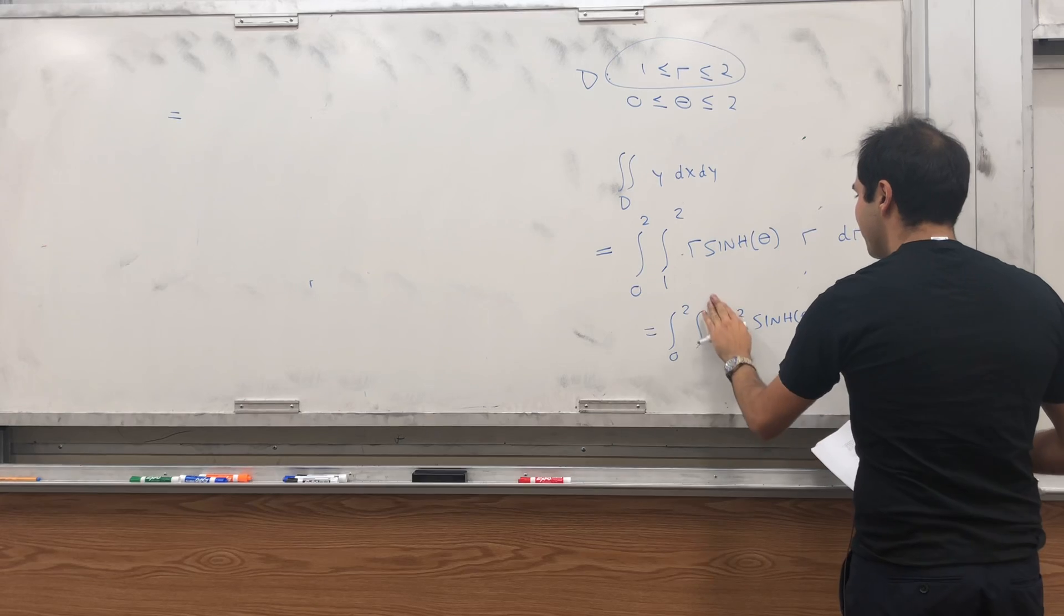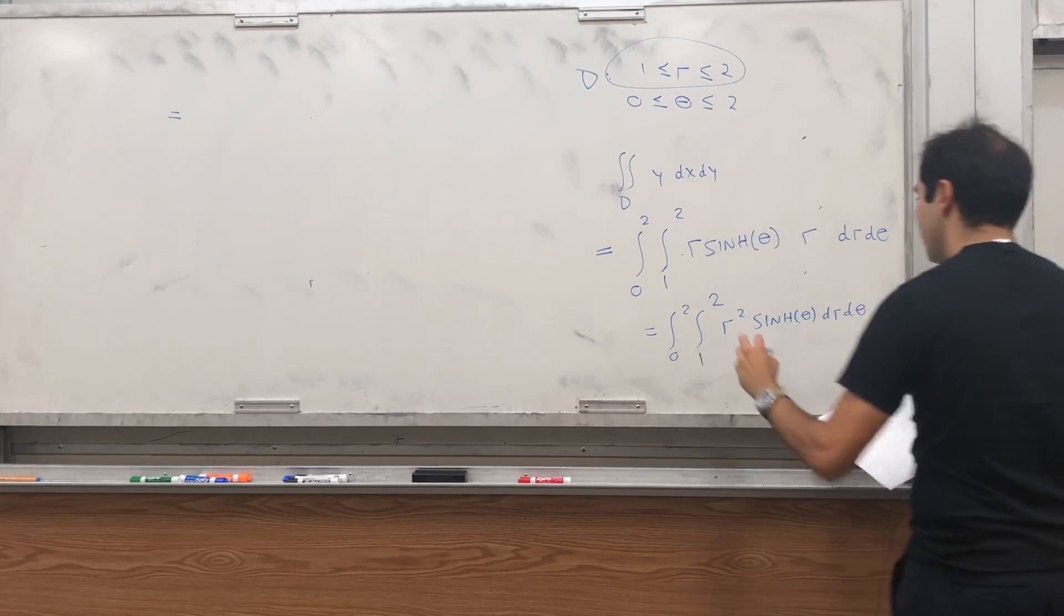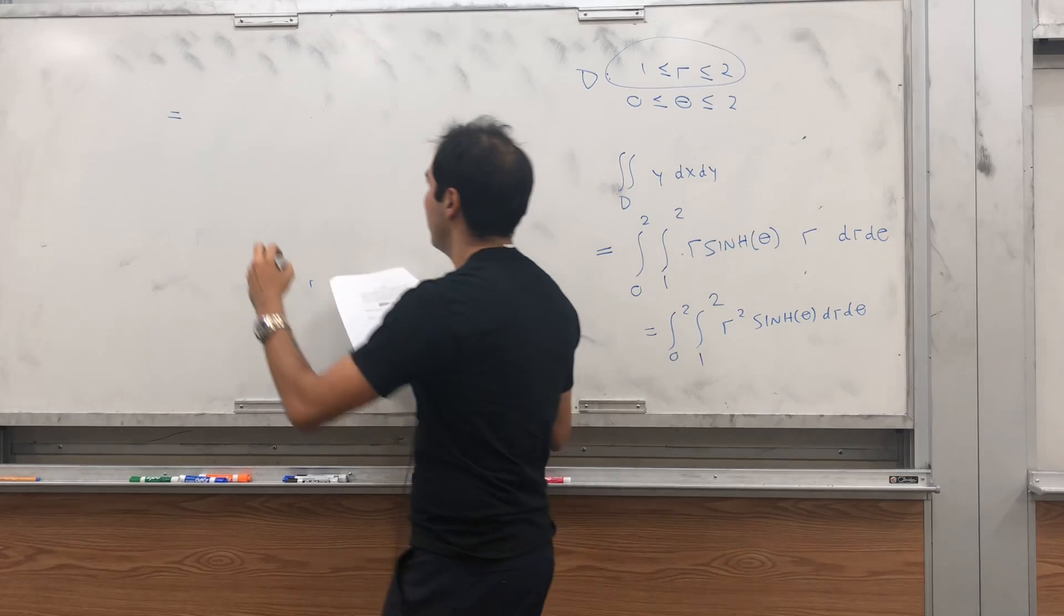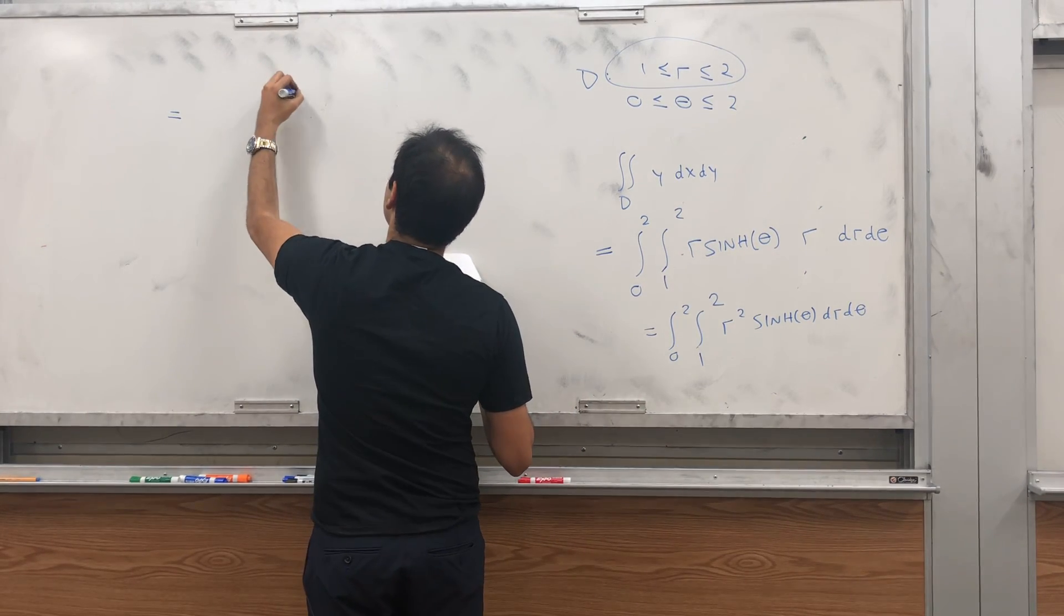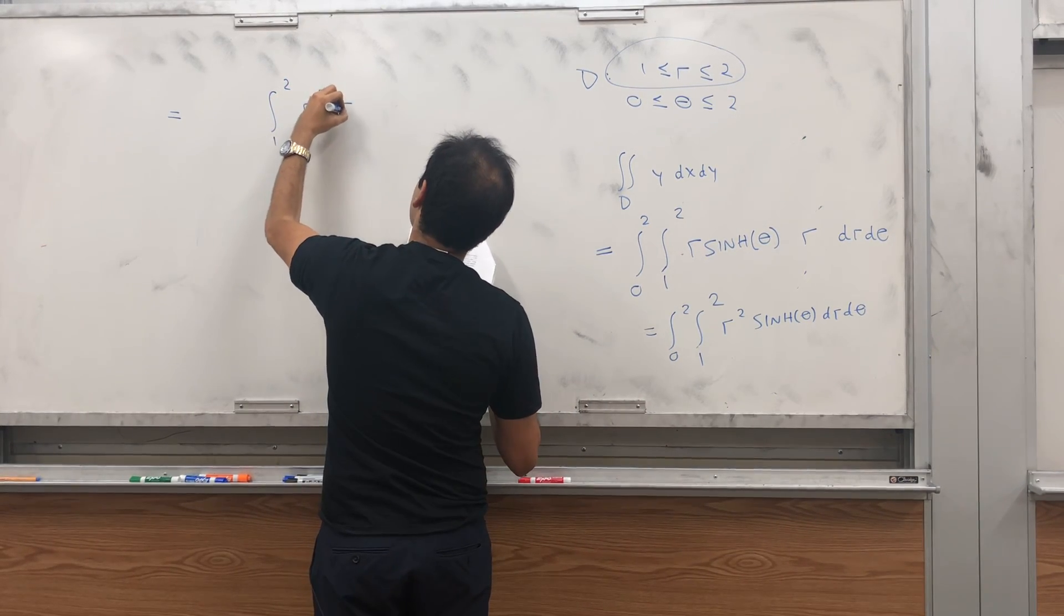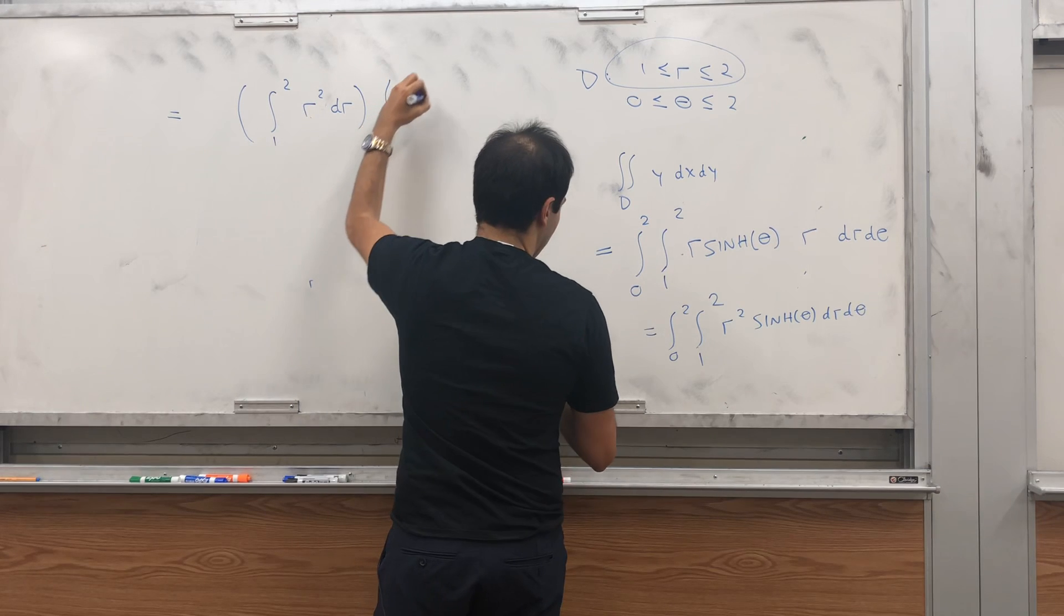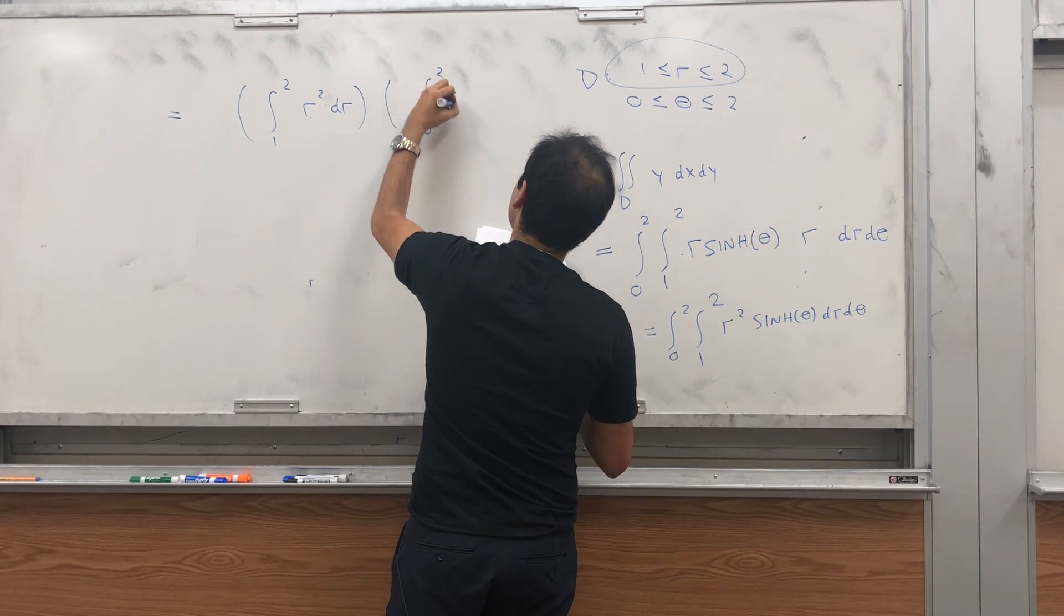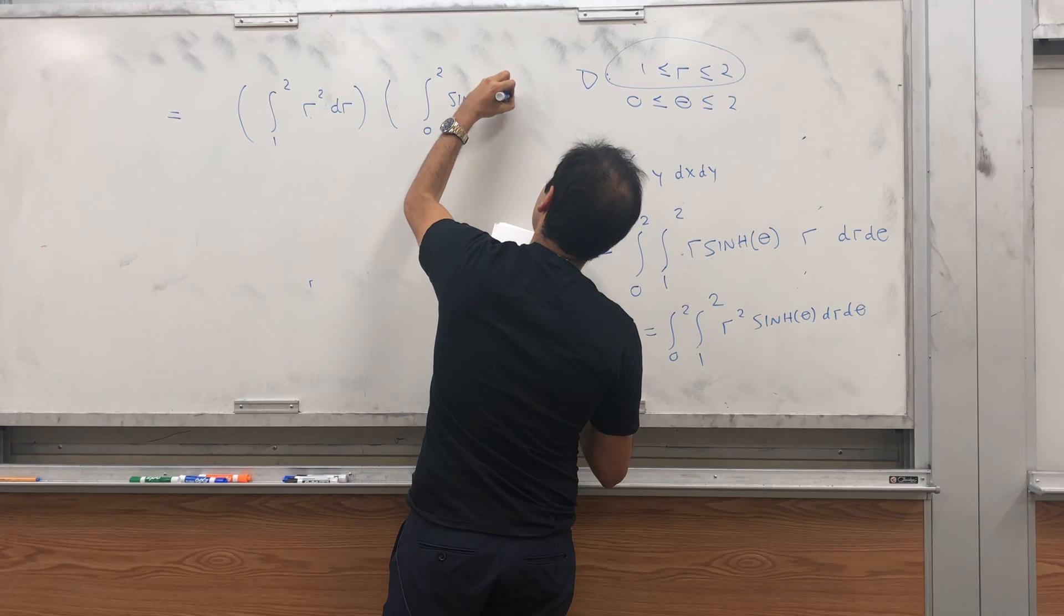And so now you can just separate it out. That's integral from 1 to 2 of r squared dr, integral from 0 to 2 of sinh theta d theta.